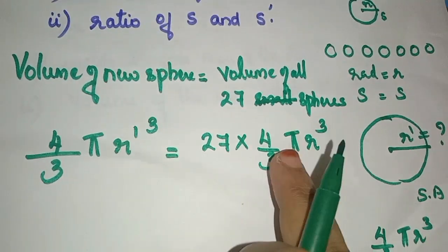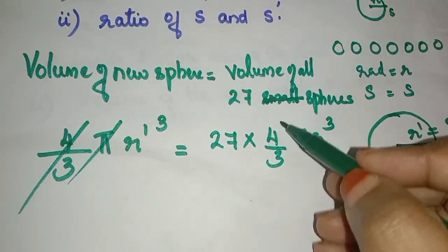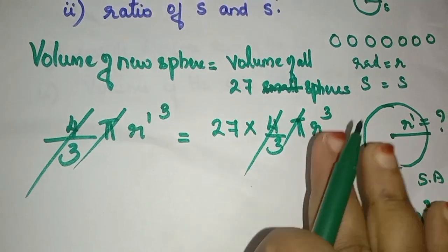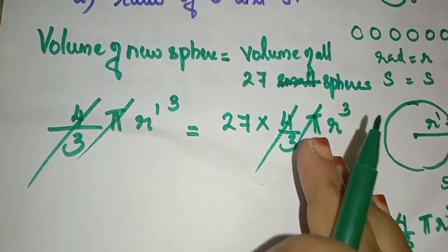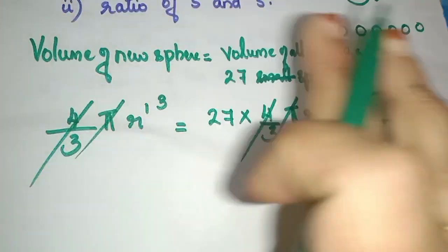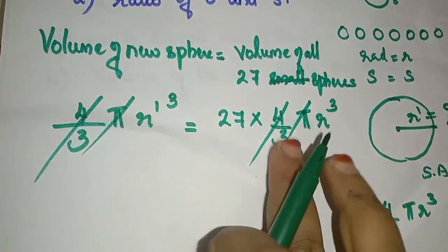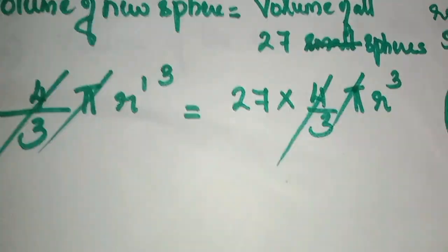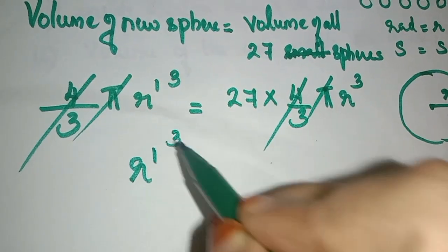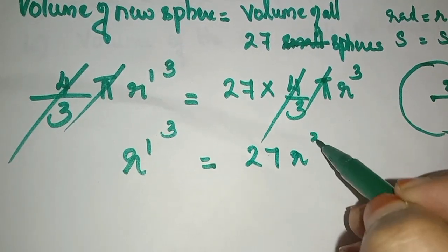We cancel out 4 by 3 pi from both sides. So R' cube is equal to 27 R cube. Now we take the cube root: R' is equal to cube root of 27 R cube.